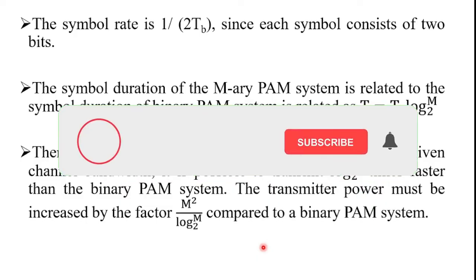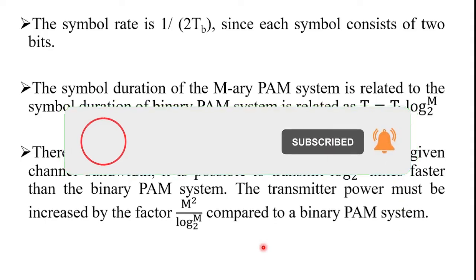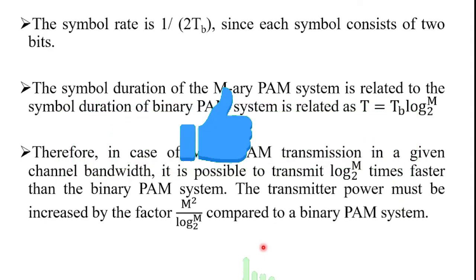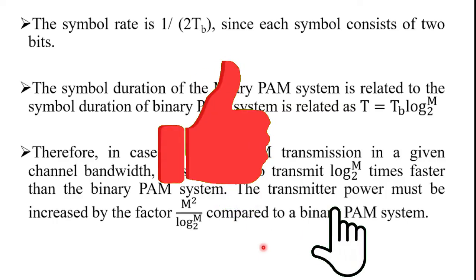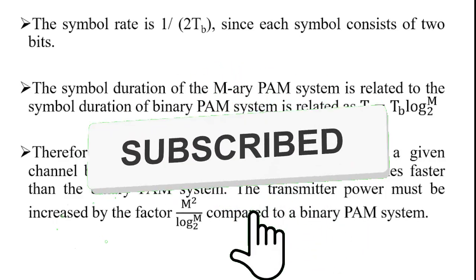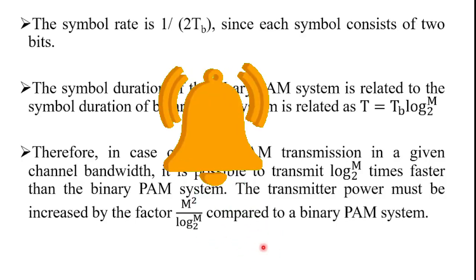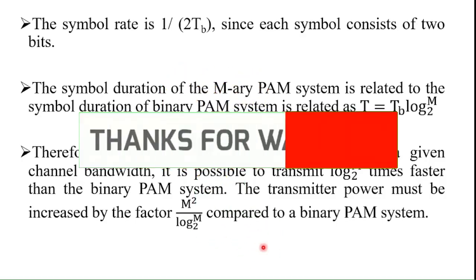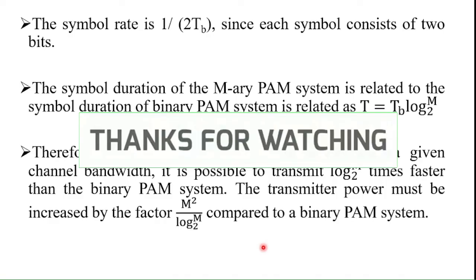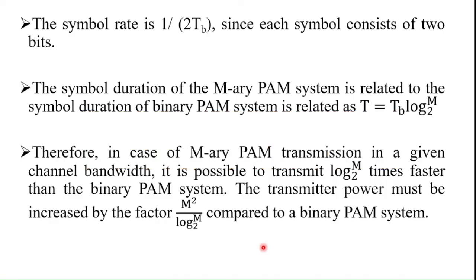First, the M-level PAM pulses are transmitted over the channel, which is affected by noise and distortion. The received signal is passed through the receiver filter and then sampled at appropriate time intervals.